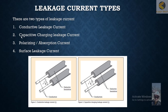This capacitive charging leakage current is called capacitive charging leakage current. After a certain time, this current will decay. Initially the resistance reading will be lower, but as the charging current decays to almost zero, the reading will increase and become stable.